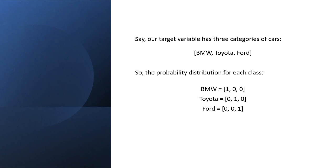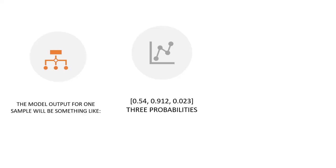Now let's check how an output of one training example will look like. It will look like this: three probabilities, 0.54, 0.912, and 0.023. Because we have three classes, so we will get three probabilities for each training example. And out of all three, the highest probability will win.